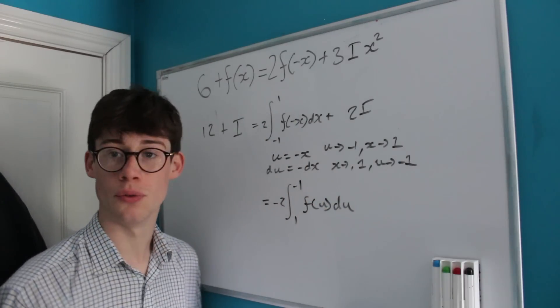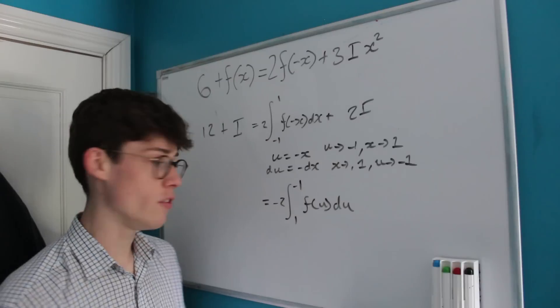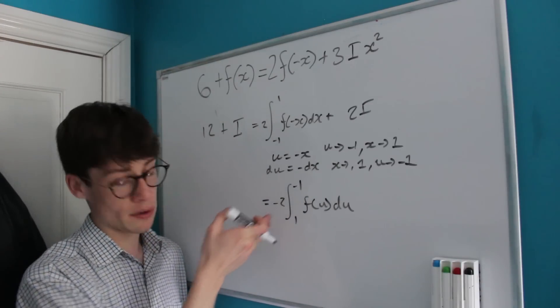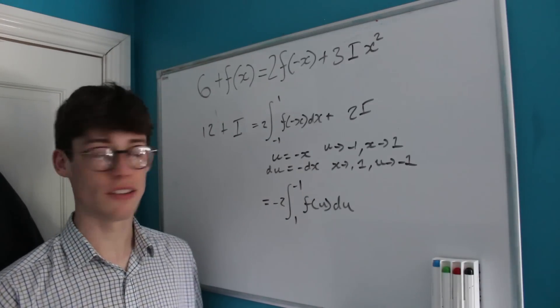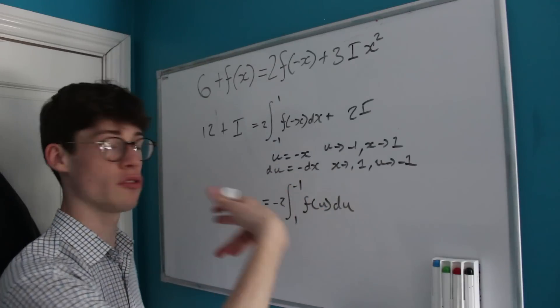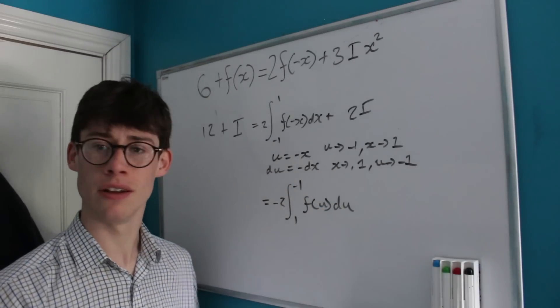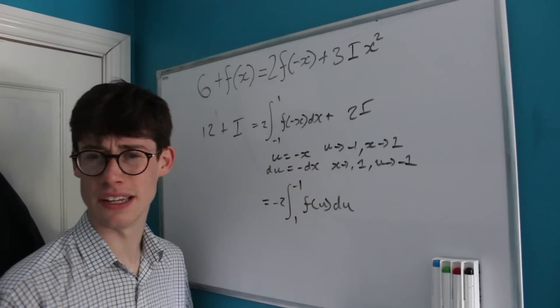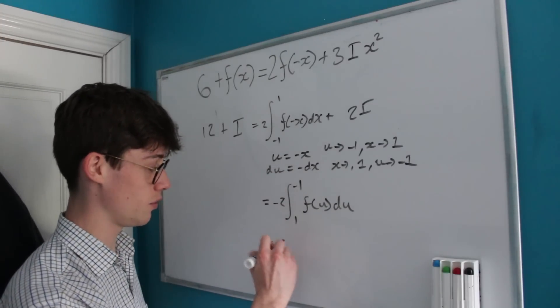This is going to be equal to -2 times the integral from 1 to -1 of f(u)du. Many of you may know this rule: when we have a negative outside of a definite integral, it allows us to swap the bounds. I'll leave a proof for that as an exercise for you guys to try. It's quite easy to prove.